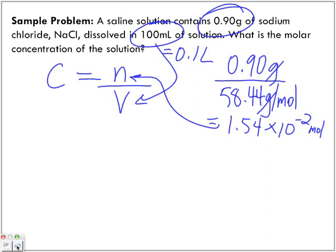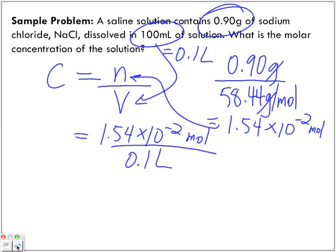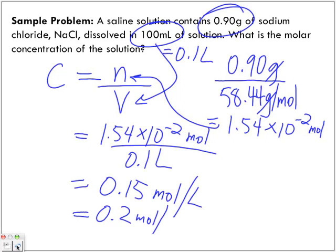So we put that in there. So the molar concentration is 1.54 times 10 to the negative 2 moles divided by 0.1 liters. So when we divide the two, we get 0.15 moles per liter.